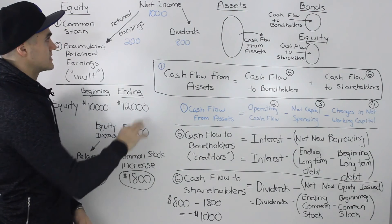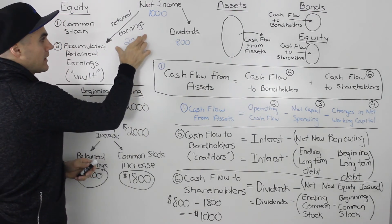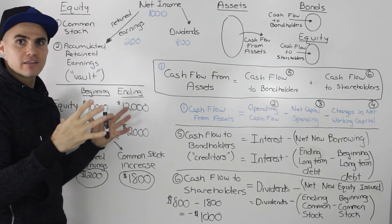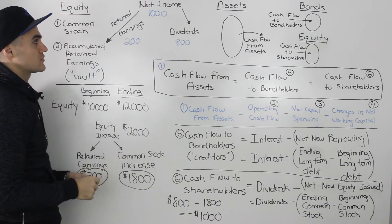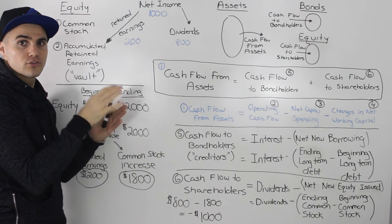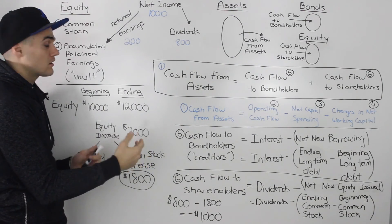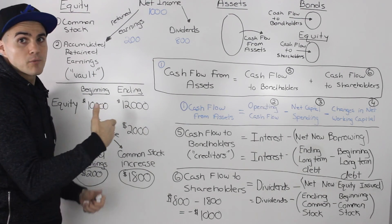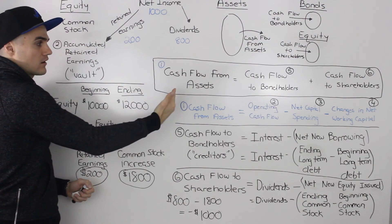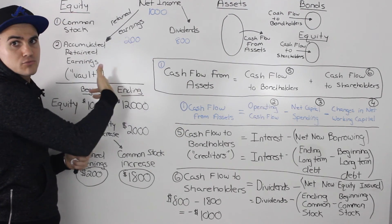One more comment: the difference between retained earnings and accumulated retained earnings. Retained earnings are what's happening during the year — the money being added into the vault. Accumulated retained earnings is the balance sheet figure under the equity section — the total money accumulated in the vault over the years. Sometimes you'll be given the retained earnings added during the year; other times you'll be given the accumulated retained earnings at the beginning and end of the year, and you'll need to subtract those two figures to find how much was added.